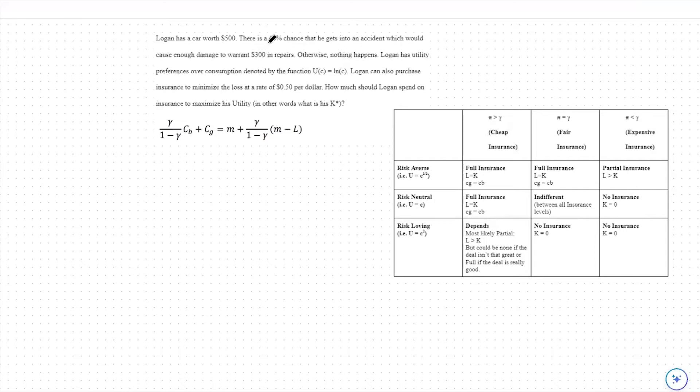We can do so by finding the comparison between our probability of the loss occurring and the premium we have to pay per dollar of insurance. We can also take a look at the utility function that we're subject to, which will tell us our risk-aversion preferences.